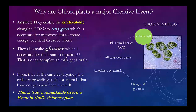Without the chloroplasts, the next step won't happen. Chloroplasts enable the circle of life by making oxygen out of carbon dioxide and sunlight, and making glucose — necessary for all neural structures to run, especially once complex animals develop a brain. They supply everything that eukaryotic animals need. This is truly a remarkable creative event in God's visionary plan. This is creative design.